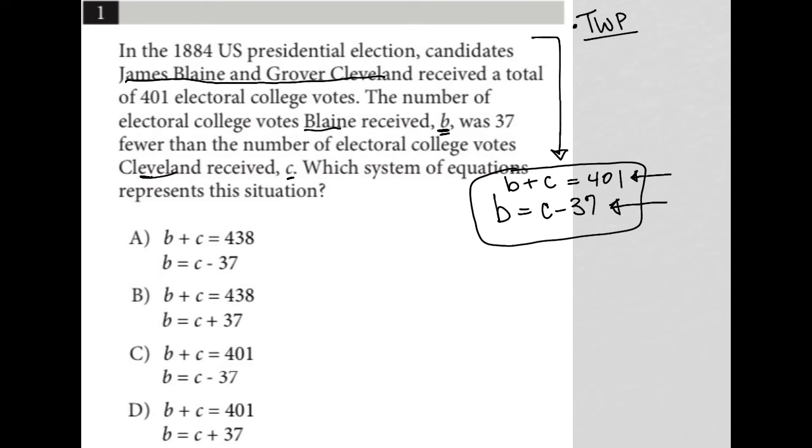When I look at my answer choices, answer choice A says B plus C equals 438. Well, that's not true. Choice B says that B plus C equals 438. That's also not true.